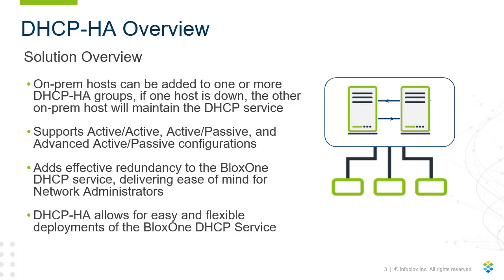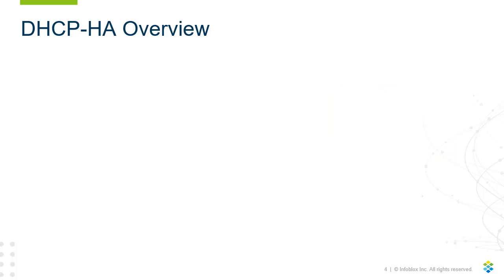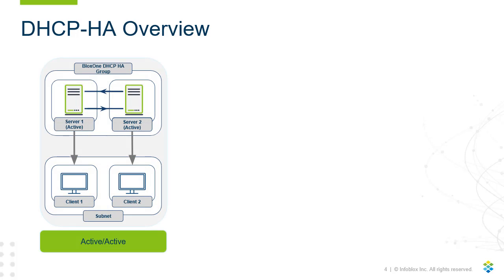The three configurations are Active-Active, Active-Passive, and Advanced-Active-Passive, also known as Hub & Spoke. This feature adds effective redundancy to the Blox 1 DHCP service, delivering ease of mind for network administrators. Additionally, DHCP High Availability allows for easy and flexible deployments of the Blox 1 DHCP service. In this slide, I'll cover each High Availability configuration. In the first configuration, Active-Active, both DHCP servers distribute DHCP requests equally. If one server experiences an outage, the other server will maintain the DHCP service handling all DHCP requests until the afflicted server comes back up. Active-Active benefits any environment where a high volume of DHCP requests may occur and load is a concern.